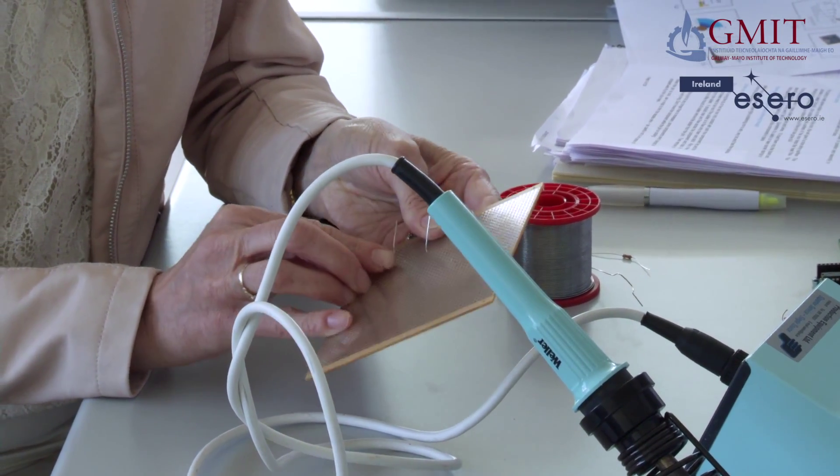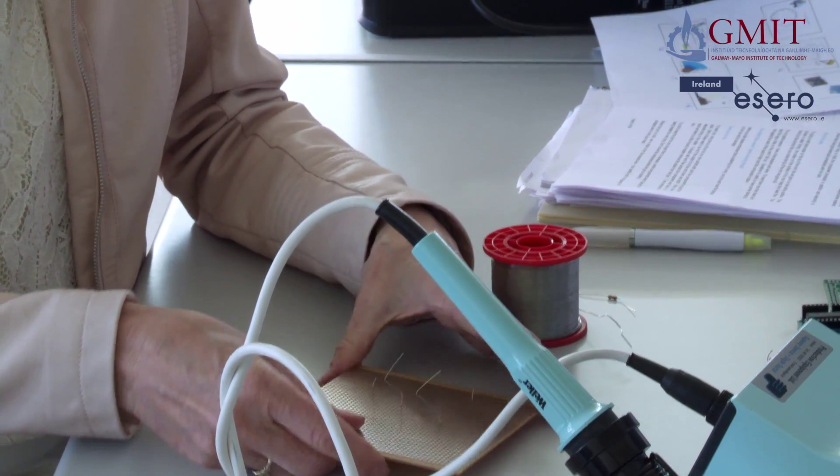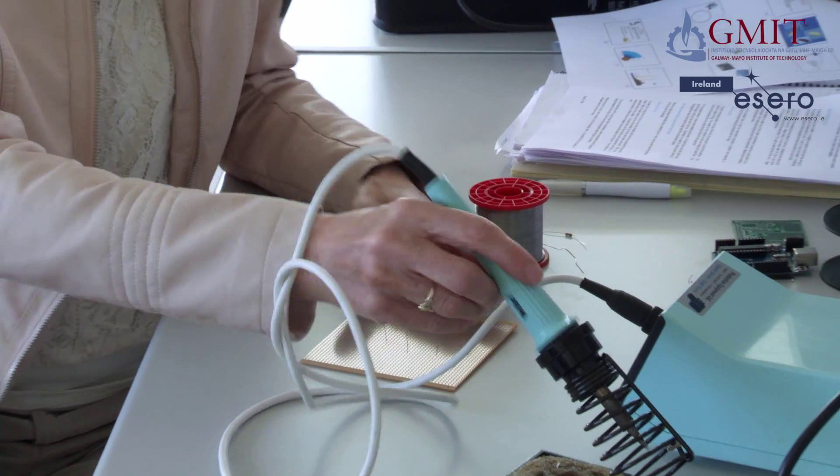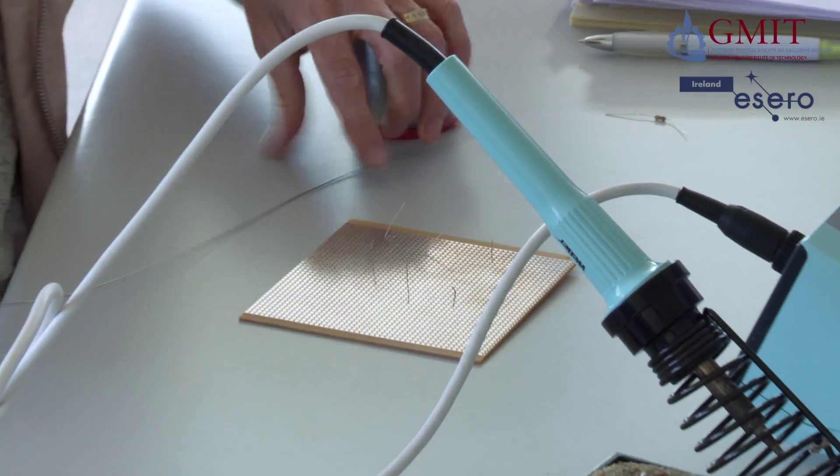Another trick that can help to hold things in place is if you have a piece of sponge or foam and leave it underneath the board. Flat components like that are relatively easy to hold in place. So I'm going to get myself a piece of solder.